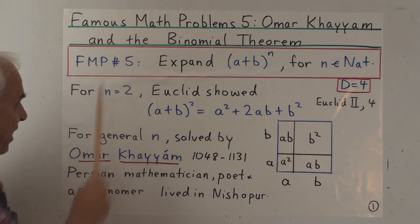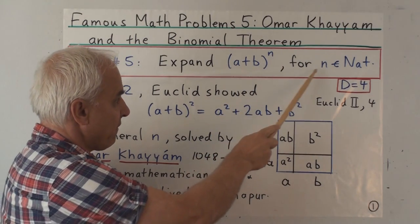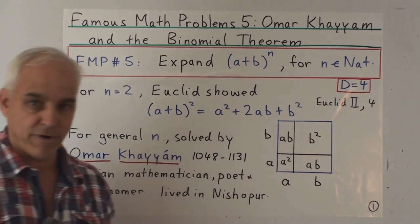All right, so famous math problem number five is to expand (a+b)^n for n, a natural number.